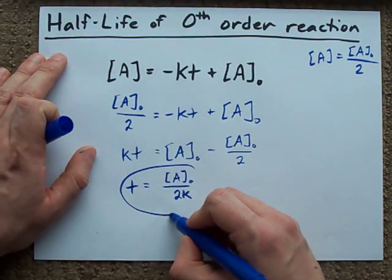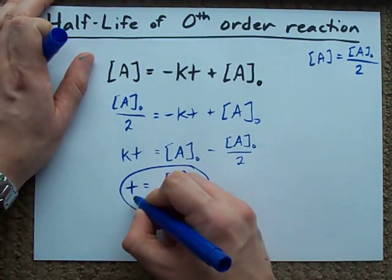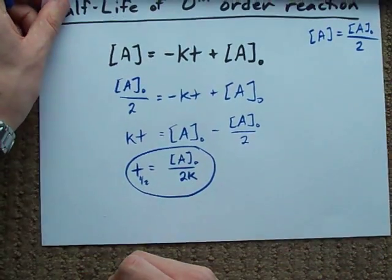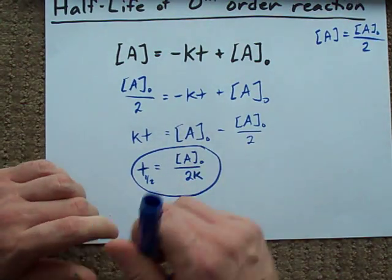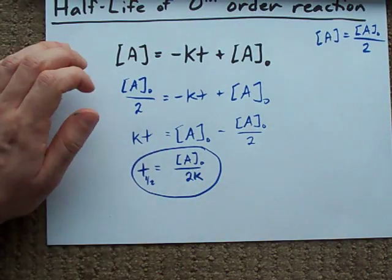And so my expression for the half-life of a zero-th order reaction is the initial concentration divided by two times the rate constant.